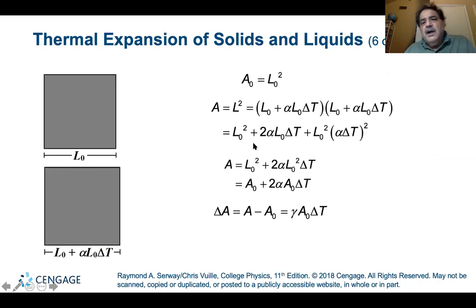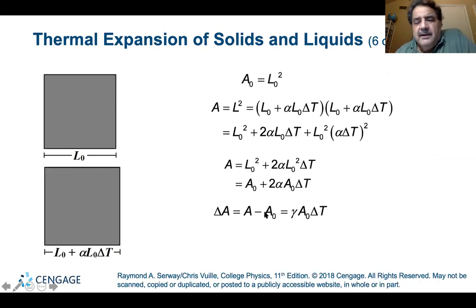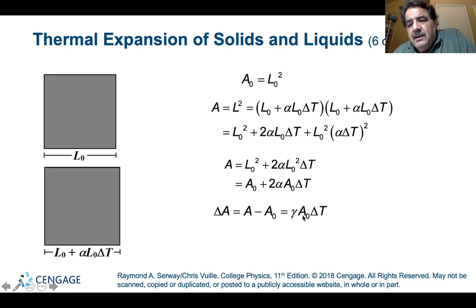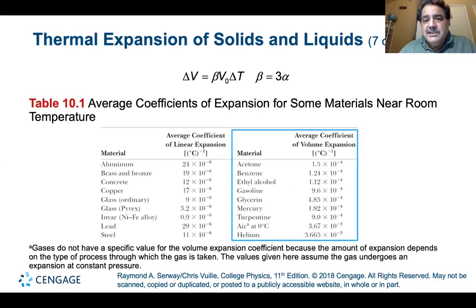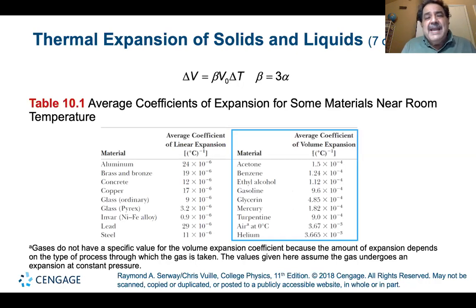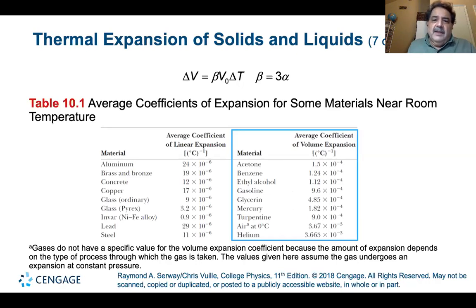For area expansion we use γ (gamma): ΔA = γ·A₀·ΔT, where γ = 2α — expansion in two directions. For volume expansion we use β = 3α — expansion in three directions. So you have linear expansion, area expansion, and volume expansion all related through the coefficient α.